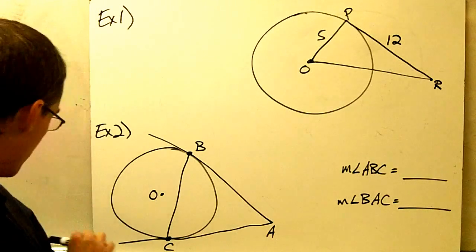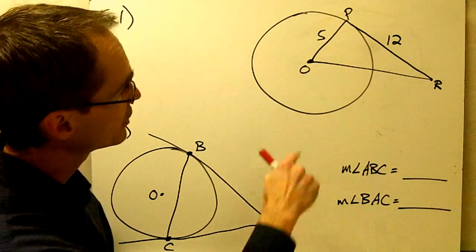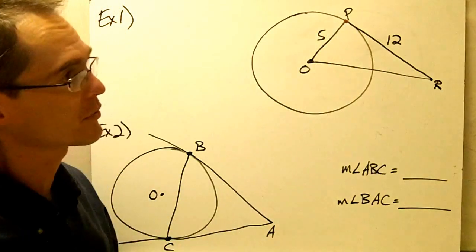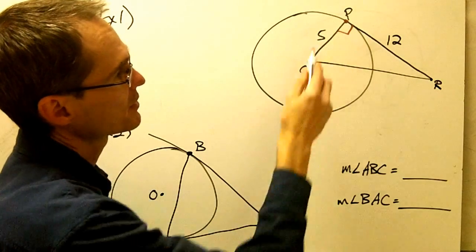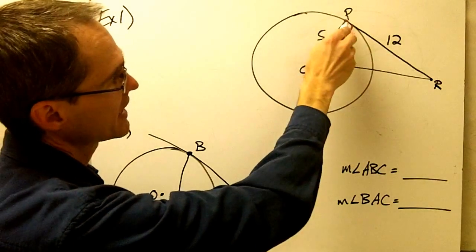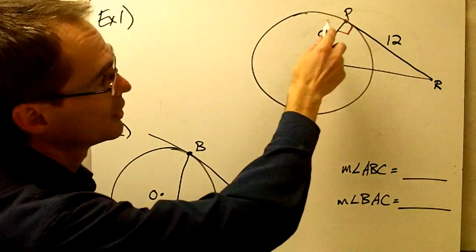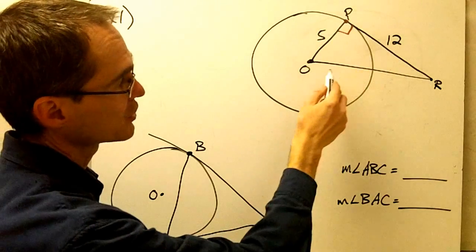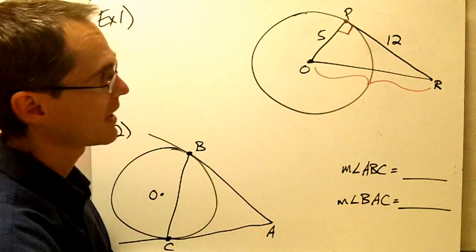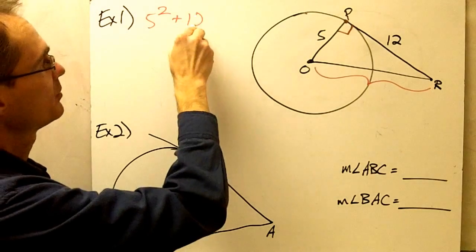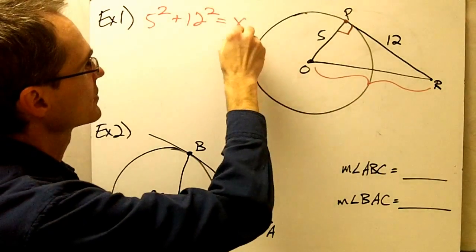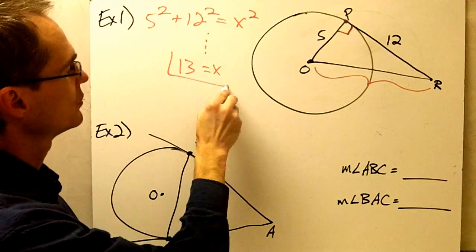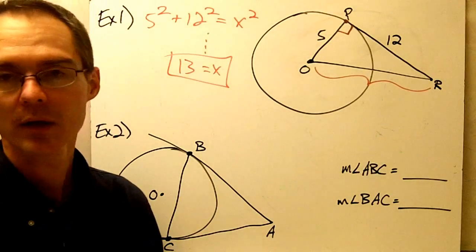On this one, since I've got a tangent line and here I've got a radius OP drawn to the point of tangency right here, I know that according to Circle Conjecture number 8 this must be a right angle — the radius drawn to the point of tangency must be perpendicular to that tangent line. So I can see what I have here is a right triangle. This side is 5, this side is 12. Finding OR is just a matter of using my Pythagorean theorem: 5 squared plus 12 squared equals X squared. And if I do the arithmetic there, I find that X is going to be equal to 13. So OR is 13.